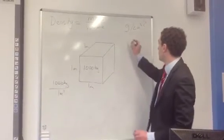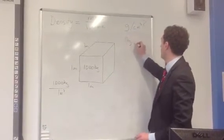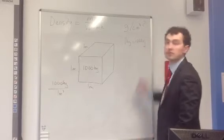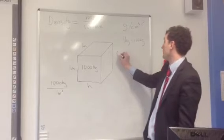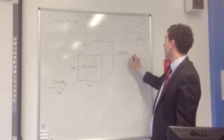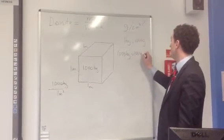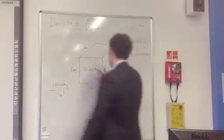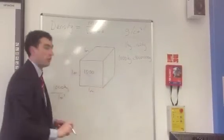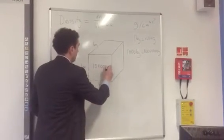I know that 1 kilogram equals 1000 grams. And if I multiply both sides by 1000 now, I will get that 1000 kilograms is equal to a million grams. So I can say that a meter cubed of water is a million grams.